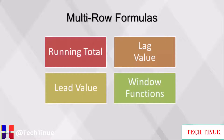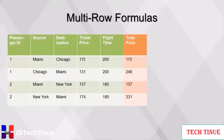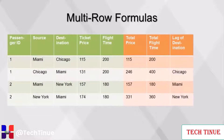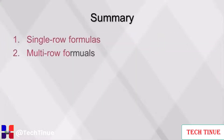Window functions should be used carefully, as values will be repeated for all levels of the dimension. An example is in the transportation industry, where a row typically represents one leg of a trip. After sorting the dataset properly, the lag function can be used to combine rows so that data describing the round trip is displayed. Total price is a running total of ticket price grouped by passenger ID; total flight time is a running total of flight time grouped by passenger ID. Lag of destination uses the lag function which is dependent on the sort order of the dataset. Sum of ticket price is a window function — the sum of ticket price partitioned by passenger ID. This concludes our video on single and multi-row formulas.